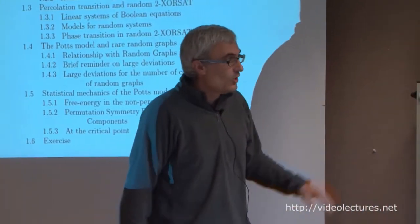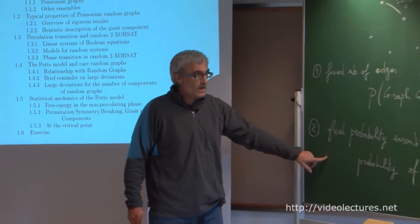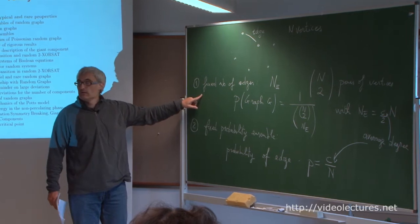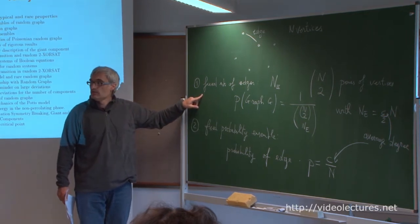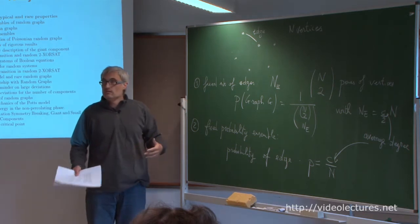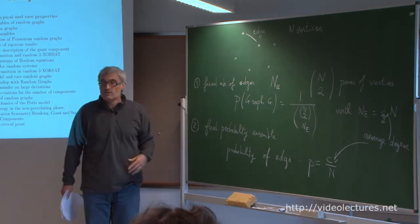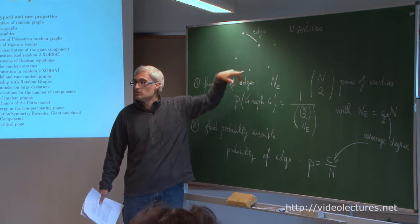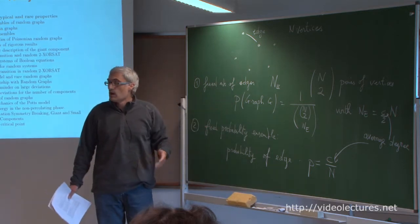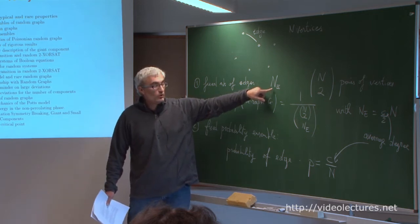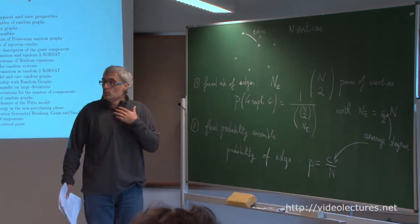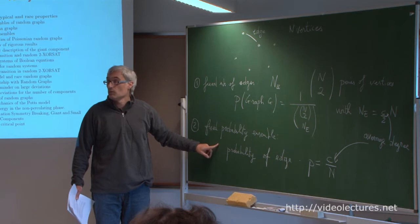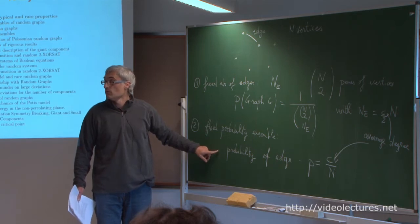The two ensembles have the same typical properties for most purposes. The fixed-number-of-edges ensemble is more convenient for numerical simulations — you draw randomly the pairs on which edges are attached, taking time proportional to n_e. The fixed-probability ensemble is more convenient for analytical studies, simply because all pairs are independent from each other, which means fewer correlations.